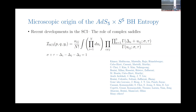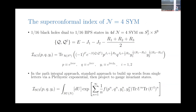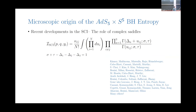In the definition of the superconformal index we only had P, Q, and two fugacities in terms of sigma and tau. But it's convenient when thinking about the complex saddles of this matrix model to introduce a third delta. When we constrain the chemical potentials sigma, tau, and the three deltas such that this particular combination equals one, that will be equivalent to inserting minus one to the F in the partition function. This is the supersymmetric condition and it plays an important role.